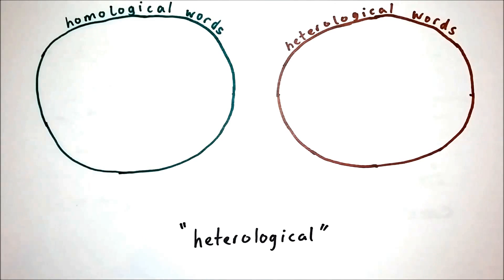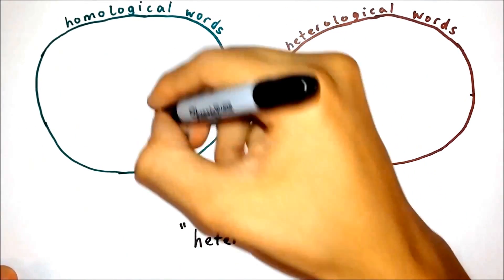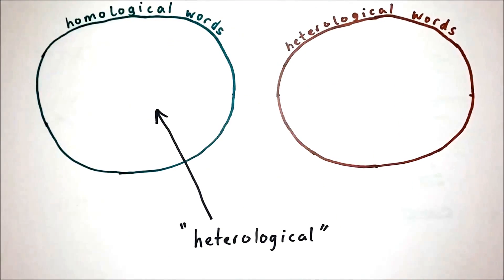If we assert that this word is homological, that is, it describes itself, then we are led to the conclusion that it is heterological, which is a contradiction.